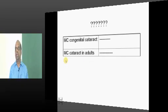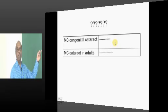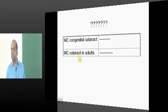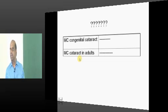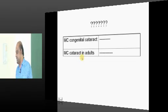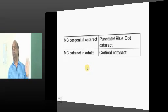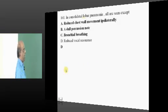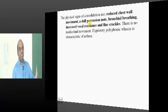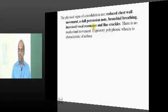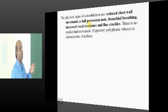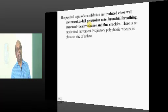Blue dot or lamellar cataract is congenital. Cortical cataract is found in adults. In lobar pneumonia, chest wall movement on that side is reduced, percussion note is dull, breathing is bronchial, vocal resonance is increased, and there will be fine crackles. That is how you identify consolidation in clinical medicine.